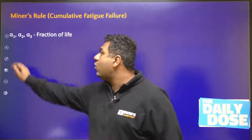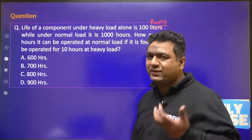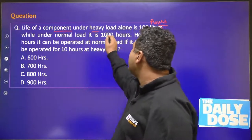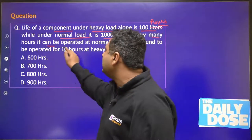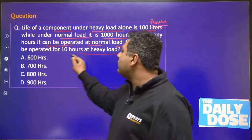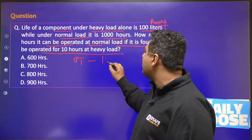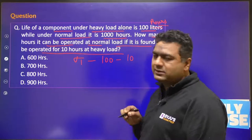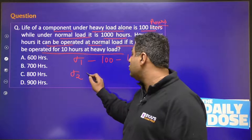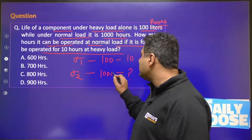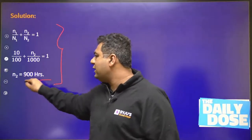Let us solve a question on this. This is a new type of concept from which questions have never been asked till now, but that is why it is important. The life of a component under heavy load is 100 hours, while under normal load it is 1000 hours. How many hours can it be operated at normal load if it has already been operated for 10 hours under heavy load? So sigma 1 is heavy load, life is 100 hours, and it has been used for 10 hours — meaning one tenth of the life has been spent. Using Miner's Rule equation, N2 comes out to be 900 hours.